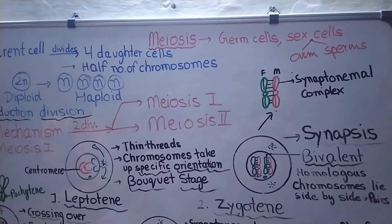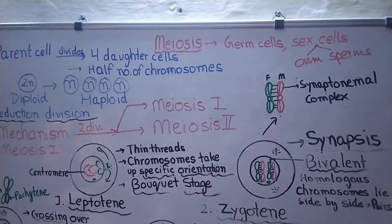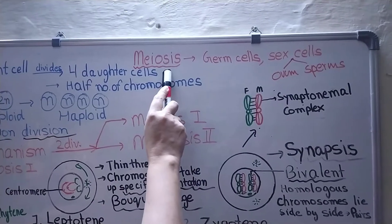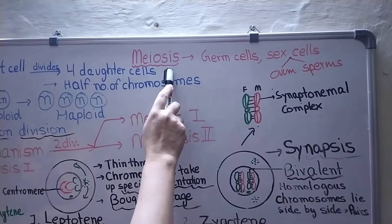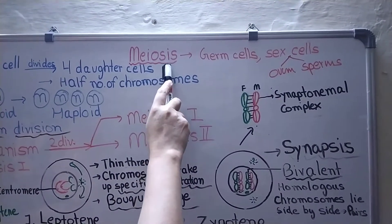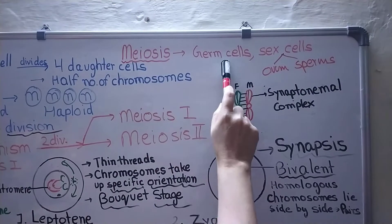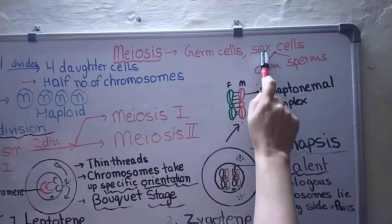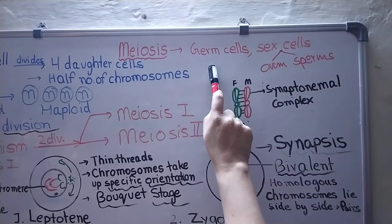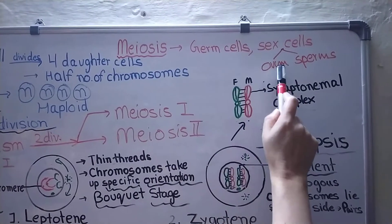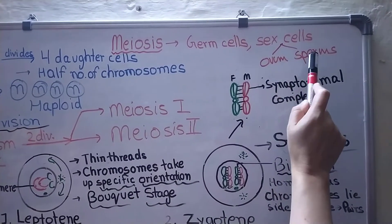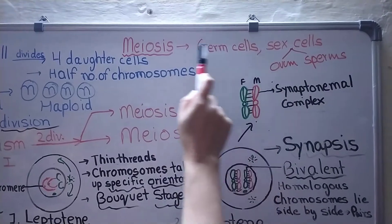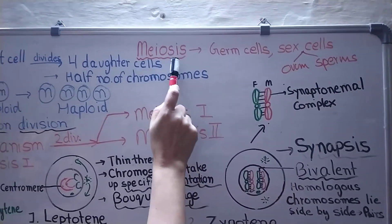Hello students, today we are going to learn about meiosis. Where does meiosis occur? It occurs in germ cells which are also called sex cells. That means the production of ovum and sperms takes place with the help of meiosis.